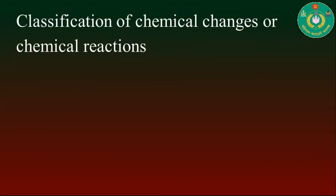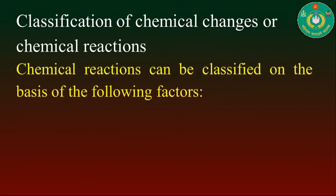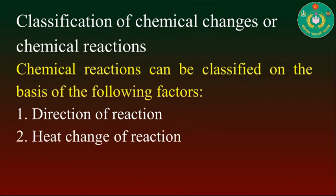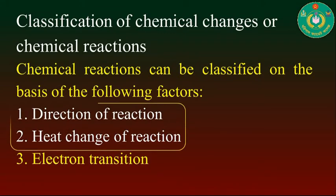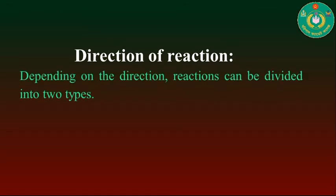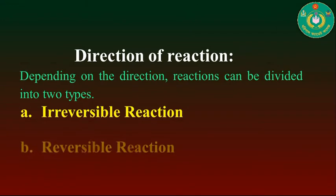Now the classification of chemical changes, or chemical reactions. Chemical reactions can be classified on the basis of the following factors: first, the direction of reaction; secondly, the heat change of reaction; and thirdly, electron transition. Today's lecture will discuss the direction of reaction and the heat change of reaction. Depending on direction, reactions can be divided into two types: irreversible reaction and reversible reaction.